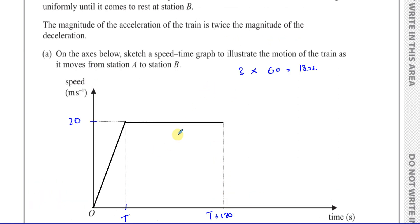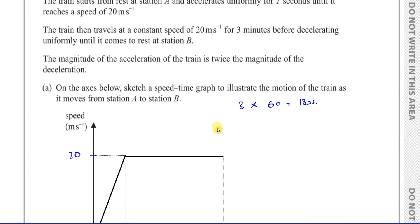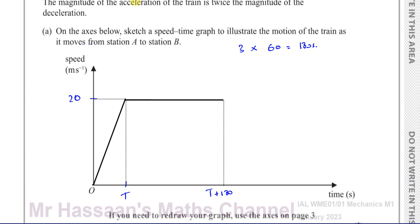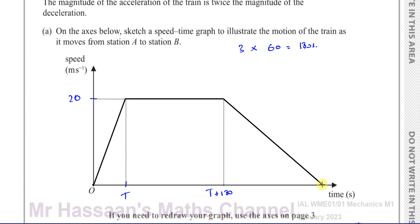Then it decelerates to rest at B. The magnitude of the acceleration is twice the magnitude of the deceleration. In a speed-time graph, acceleration is given by the gradient. So the gradient — the steepness — in the beginning must be greater than the steepness when it's decelerating. The first slope is steeper than the second part. You must show that in your diagram to get the full marks, because it's mentioned very clearly.